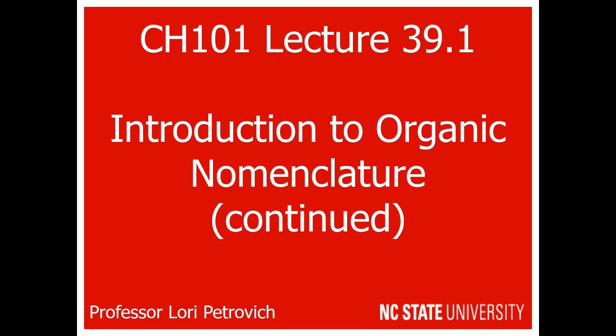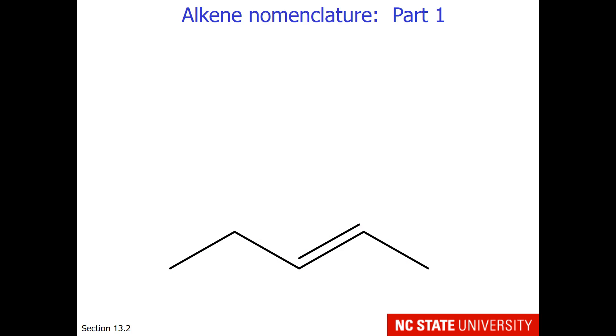Now that you've seen that 2-butene has two different structures — one with a Z configuration and the other with an E configuration — we need to finish up on our introduction to organic nomenclature. So let's start with some alkene nomenclature.